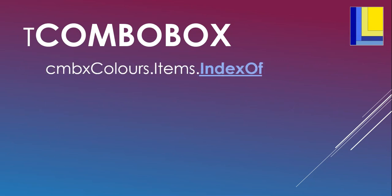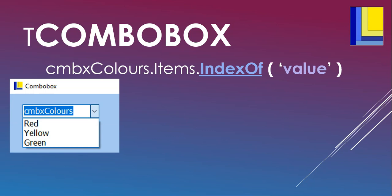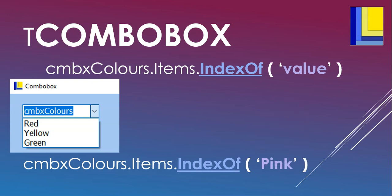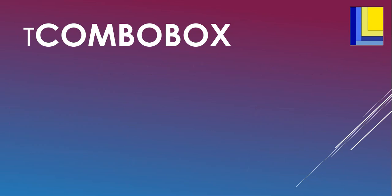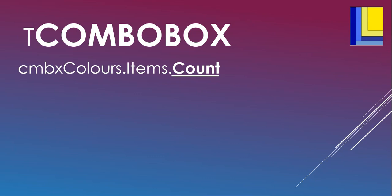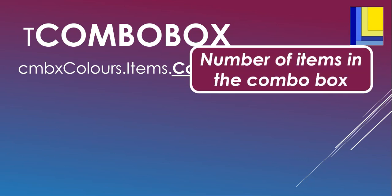IndexOf tells you the position of a value you're searching for in the combo box. If you give it 'red', it returns 0 because that's the first item. If you search for 'pink' and it's not in the combo box, it returns negative 1 — useful for error checking. The Count property tells you how many items are in the combo box; if there are seven items they go from 0 to 6, so Count is always one more than the last position index.